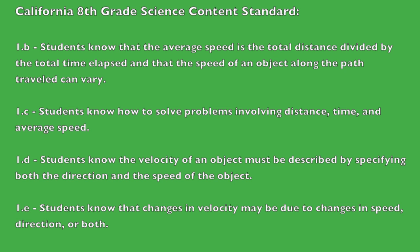Standard 1d states that students know the velocity of an object must be described by specifying both the direction and the speed of the object. Standard 1e states that students know that changes in velocity may be due to changes in speed, direction, or both.